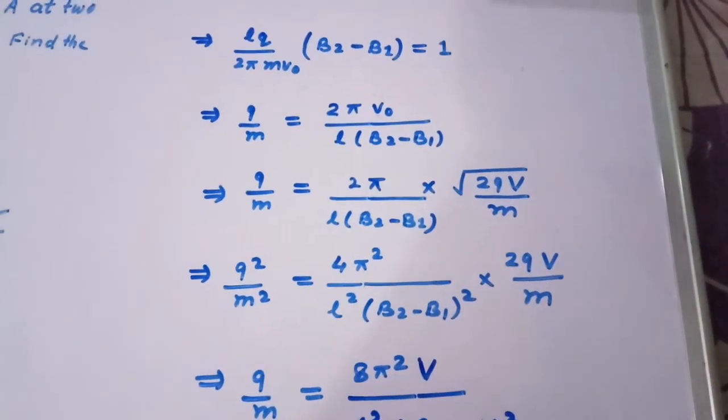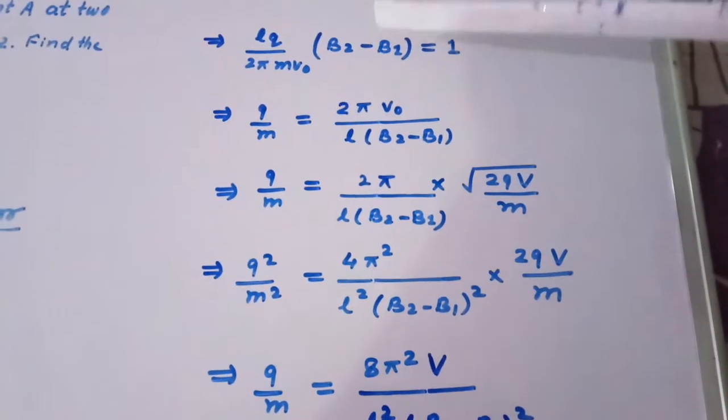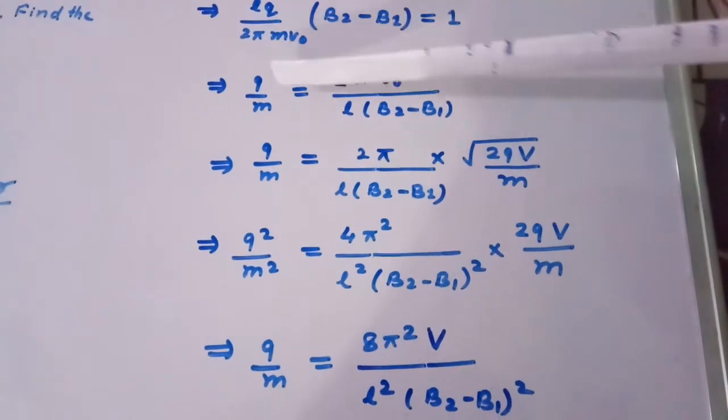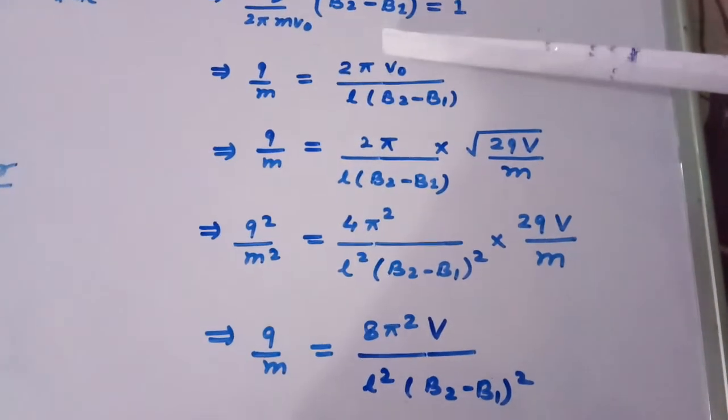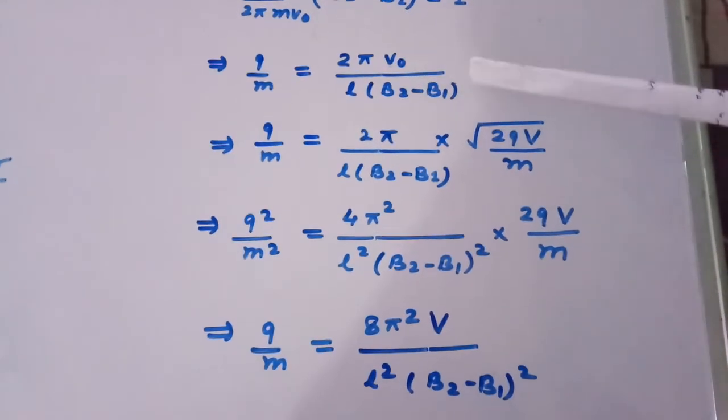Now we further simplify so we get LQ divided by 2 pi M V0 times B2 minus B1 equal to 1, or Q upon M equal to 2 pi V0 divided by L times B2 minus B1.